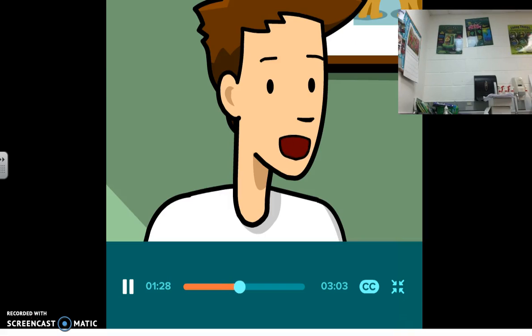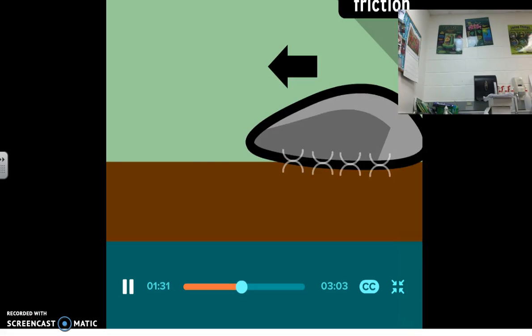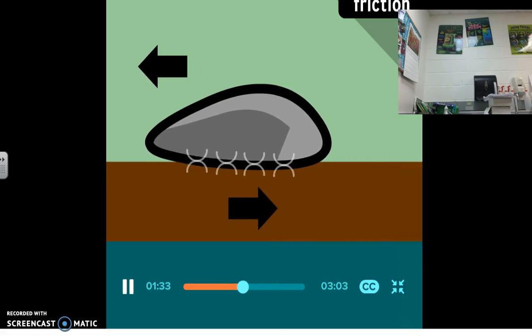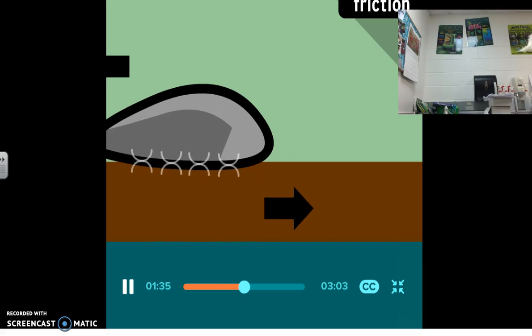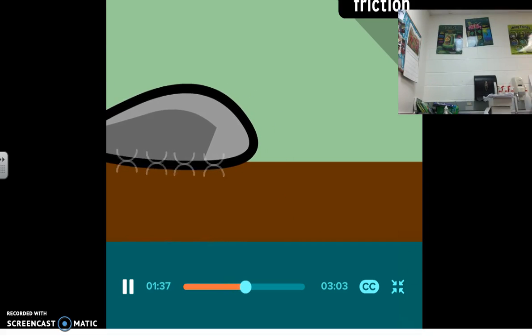Why didn't it keep going? Well, in this case, the force acting on the rock was friction. Friction is the resistance caused by any two objects in contact, and it always acts in the opposite direction of the motion.